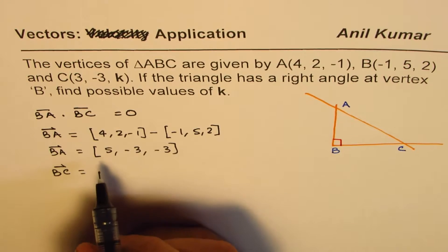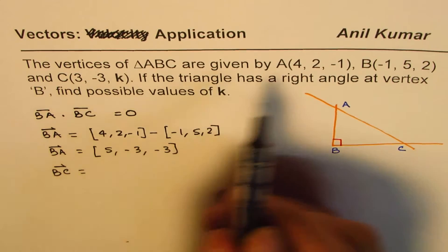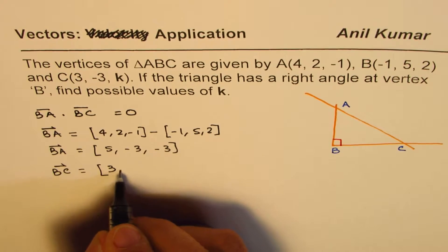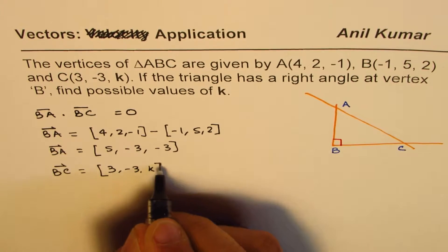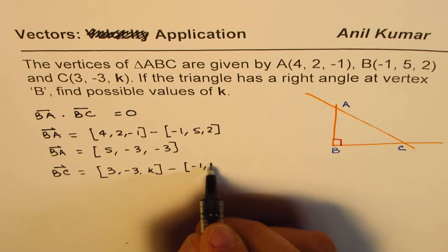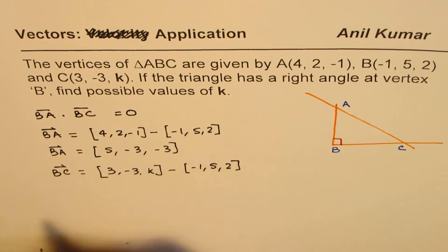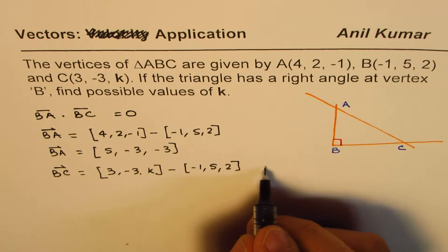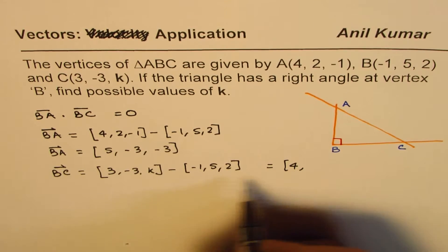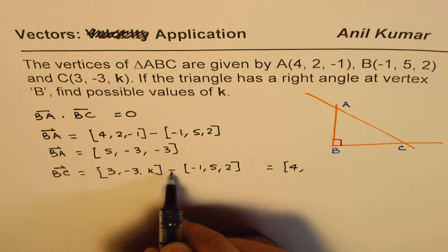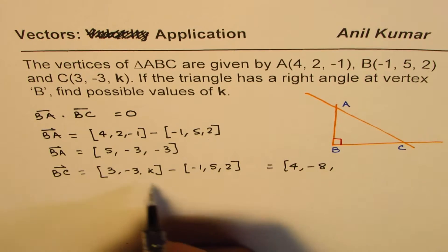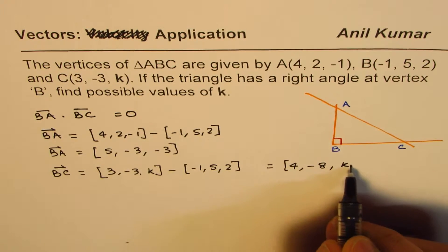Now let's find BC. BC is C minus B. C is (3, -3, K) and B's position vector is (-1, 5, 2). That gives us: 3 plus 1 is 4, -3 minus 5 is -8, and K minus 2. So vector BC is (4, -8, K-2).